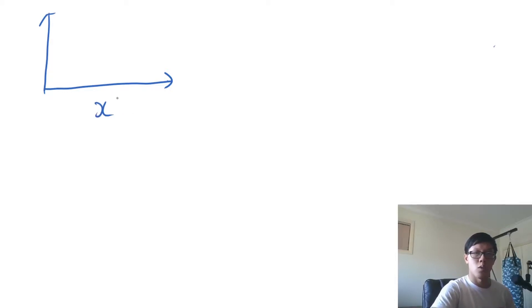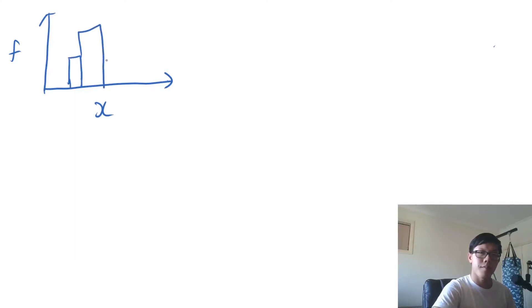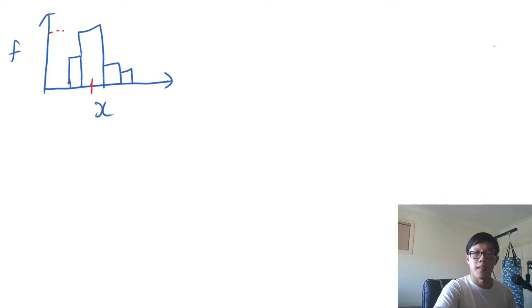So if I have my scores here and frequency here, I'm going to draw a histogram. Let's say it looks like this. In this case, my mode would be whatever x value is here because it has the highest frequency.